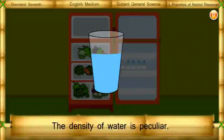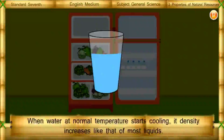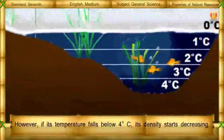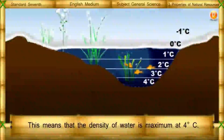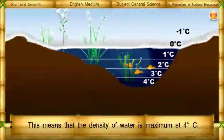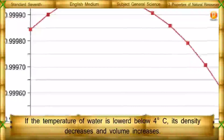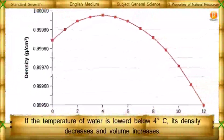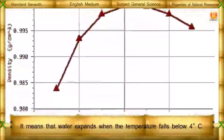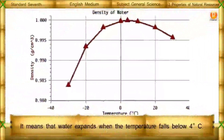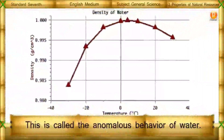The density of water is peculiar. When water at normal temperature starts cooling, its density increases like that of most liquids. However, if its temperature falls below 4 degrees Celsius, its density starts decreasing. This means that the density of water is maximum at 4 degrees Celsius. If the temperature of water is lowered below 4 degrees Celsius, its density decreases and volume increases — water expands when the temperature falls below 4 degrees Celsius. This is called the anomalous behavior of water.